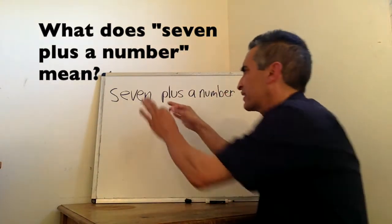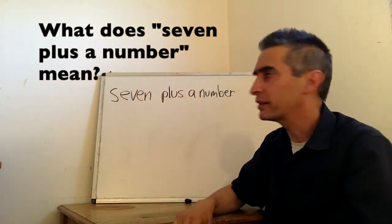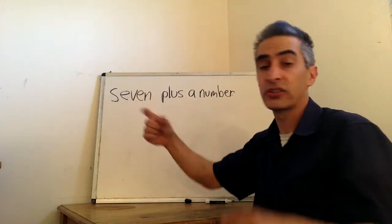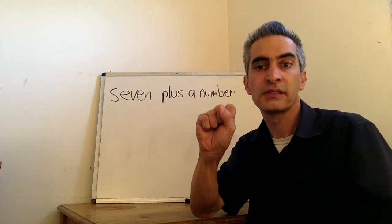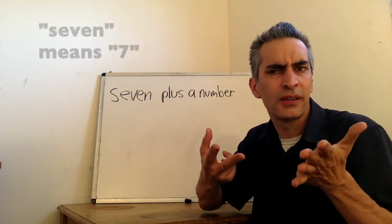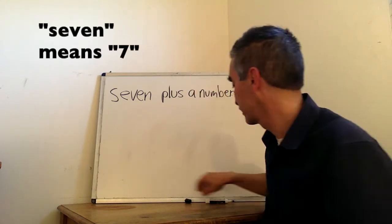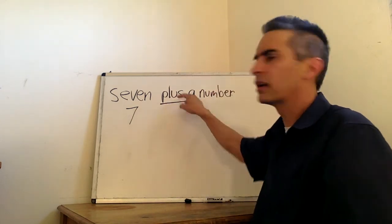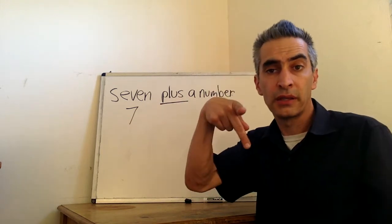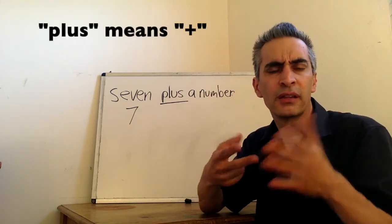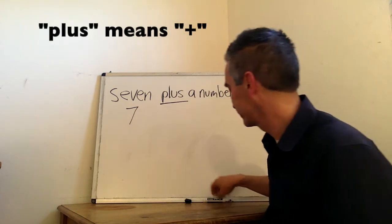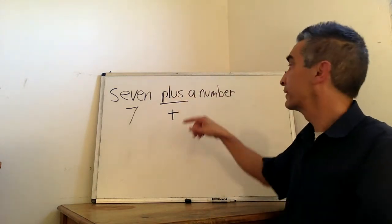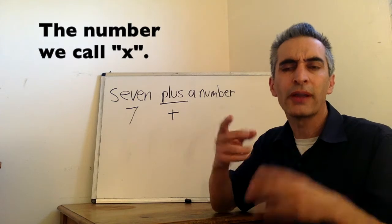Here's another example. What does this expression mean? Again, we're going to start right here. This word is where we're going to start. What does this mean? Right, it means seven. And this word, what does that mean? Right, that means plus. And again, this word shows up. This is a number that we're going to call x.